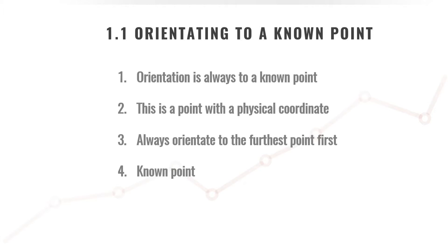Because this will enable the software on the total station to know exactly where you are, to be able to do all the relevant computations — setting out, doing a DTM — everything to the correct scale and geographic location. When we look at the term 'known point', this is just a point with a physical coordinate. That specific point where you are orientating to and have set up to get the geographic location is a point with a physical coordinate.